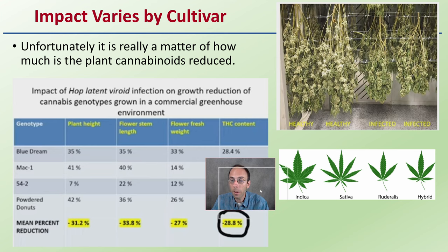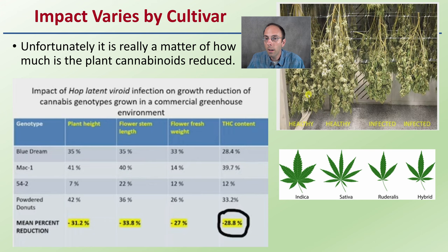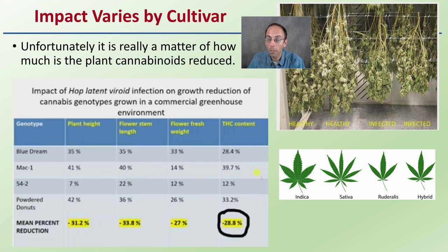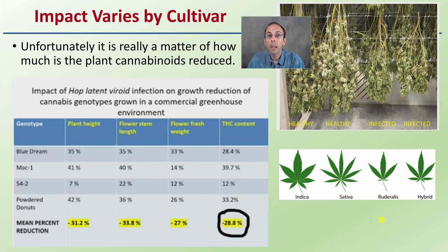Looking at impacts by cultivar, comparing healthy versus infected plants hanging to dry, it really is a matter of how much plant cannabinoids are reduced. The cultivar does have an impact. A couple of genomes listed here show changes in plant heights, flower to stem length, fresh flower weight, and THC content. This isn't indica only or sativa only — a lot of ruderalis and hybrids are included. There's no indication yet that indica, sativa, or ruderalis is more or less susceptible; it's cultivar-specific. I've got other videos on the channel on this, as it's becoming more recognized, and something to identify and develop a plan to remove — the hopeful long-term goal.